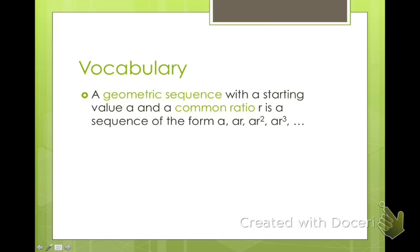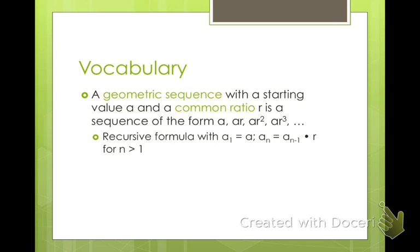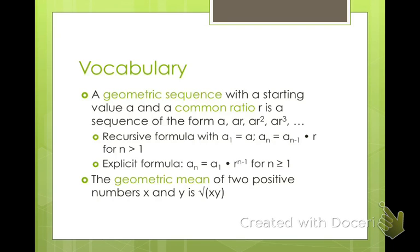For your vocabulary, a geometric sequence with a starting value a and a common ratio r is a sequence of the form: a, a times r, a times r squared, a times r cubed, and so on — you're multiplying and raising that ratio to a power. You'll want to know both the recursive formula and the explicit formula for finding a certain numbered term. The geometric mean of two positive numbers x and y is the square root of x times y. We can't use a positive and a negative number because that gives us a negative under the square root, producing imaginary numbers. So geometric means are with positive numbers only.